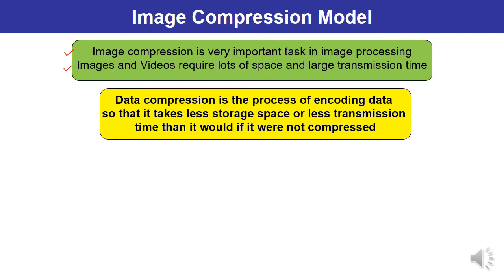So how can you explain the term data compression? Data compression is the process of encoding data so that it takes less storage space and less transmission time in comparison to the original data. This is what data compression means.